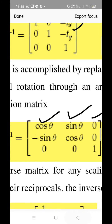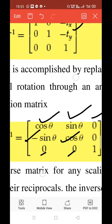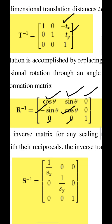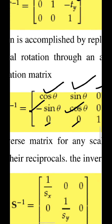So this is what inverse rotation is. Briefly: instead of theta you consider minus theta, then apply the trigonometric properties. Cosine of minus theta gives cos theta only, and sine of minus theta gives minus sine theta. That's the inverse rotation matrix.